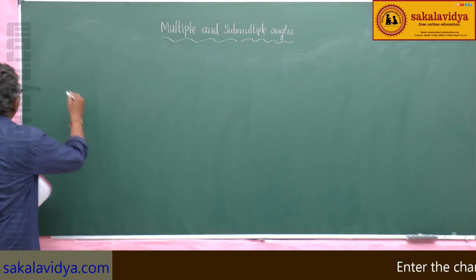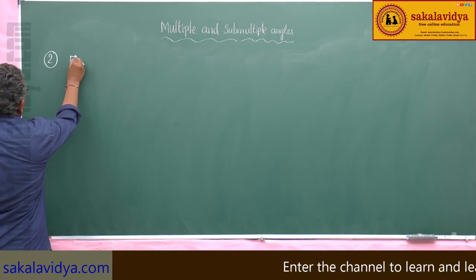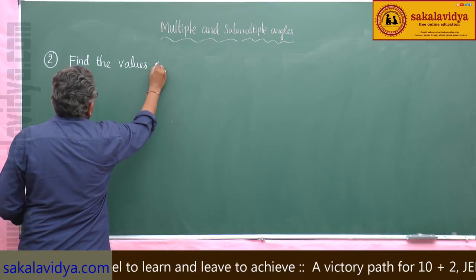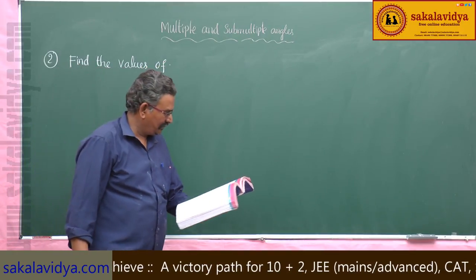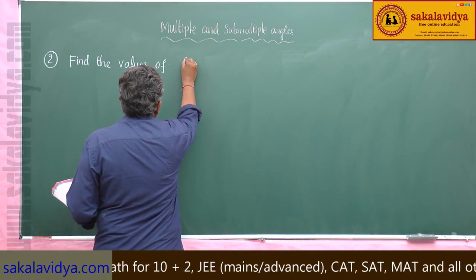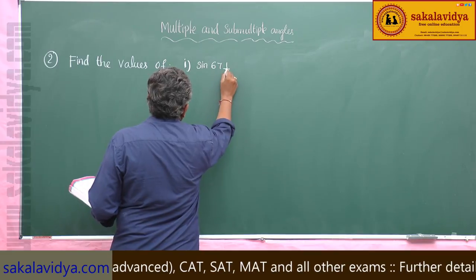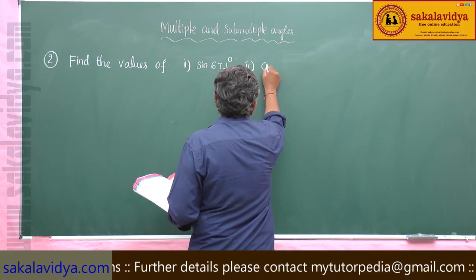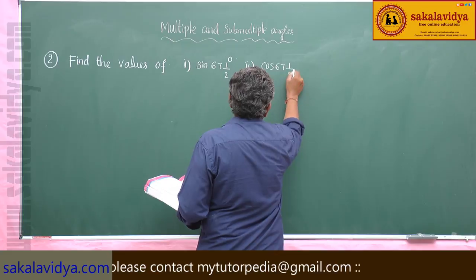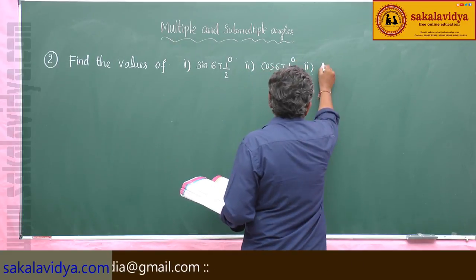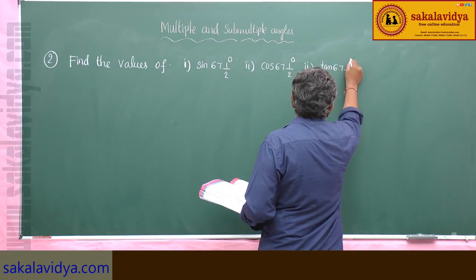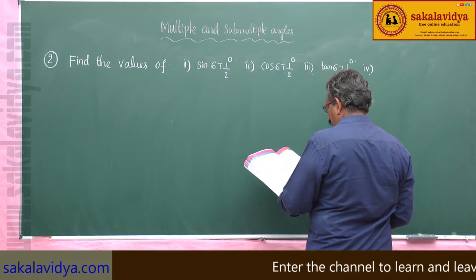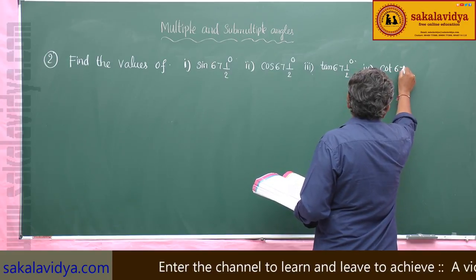Second problem: find the values of — Number 1, sin 67 and a half degrees; second, cos 67 and a half degrees; third, tan 67 and a half degrees; fourth, cot 67 and a half degrees.